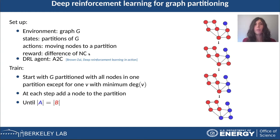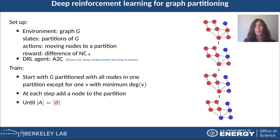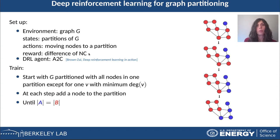The deep reinforcement learning agent we use is called the asynchronous advantage actor-critic. By agent, I simply mean a deep neural network with a particular loss function that has to be minimized in order to find the optimal parameters of the deep neural network.